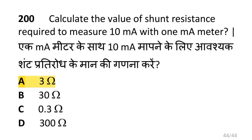Calculate the value of shunt resistance required to measure 10 mA with a 1 mA meter. That is 3 ohm.